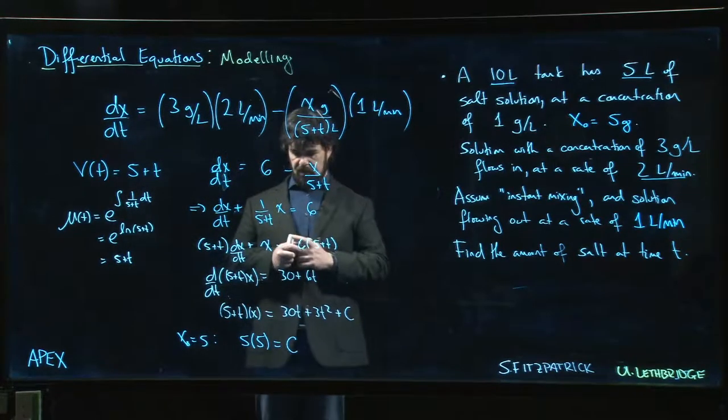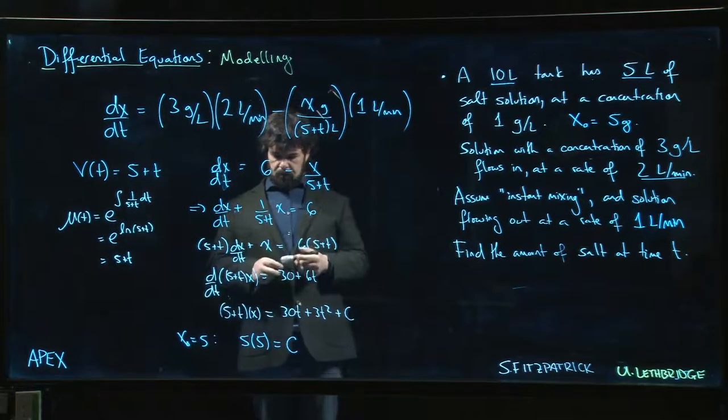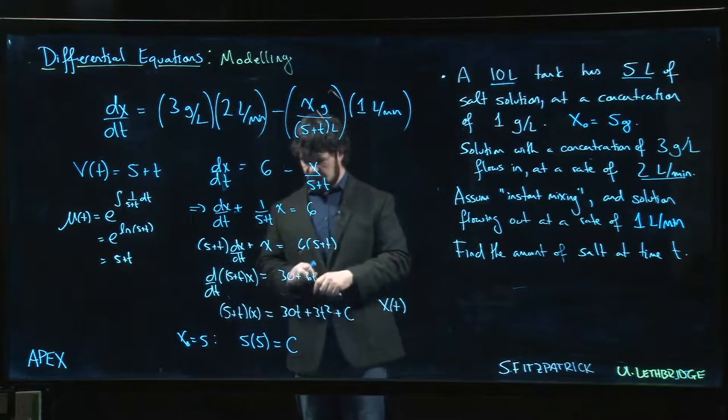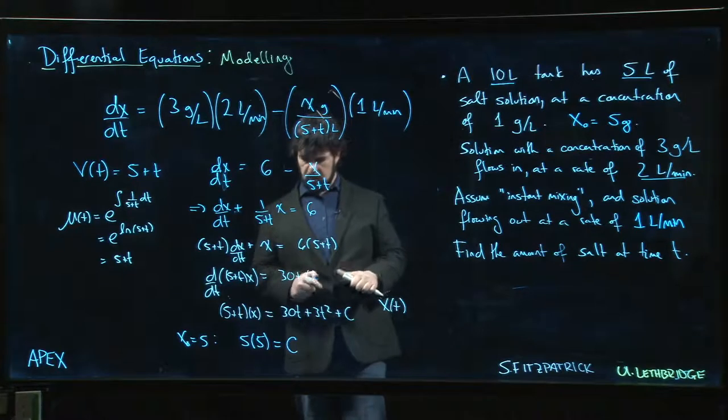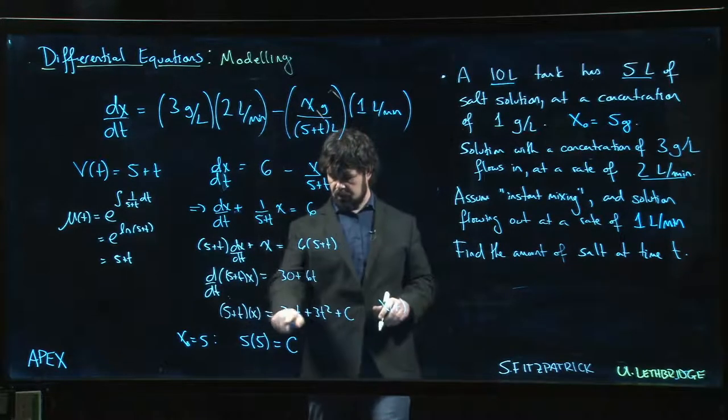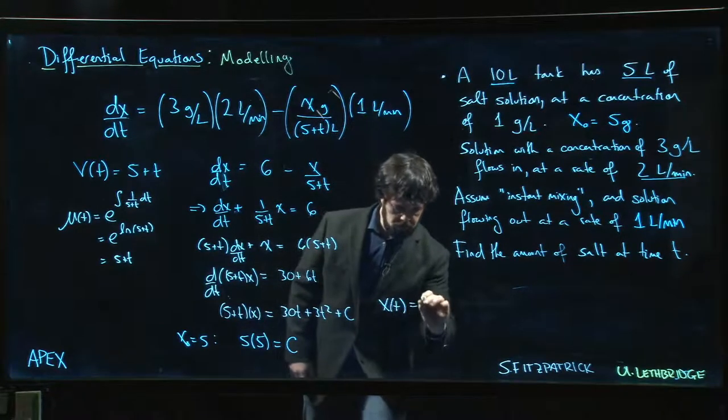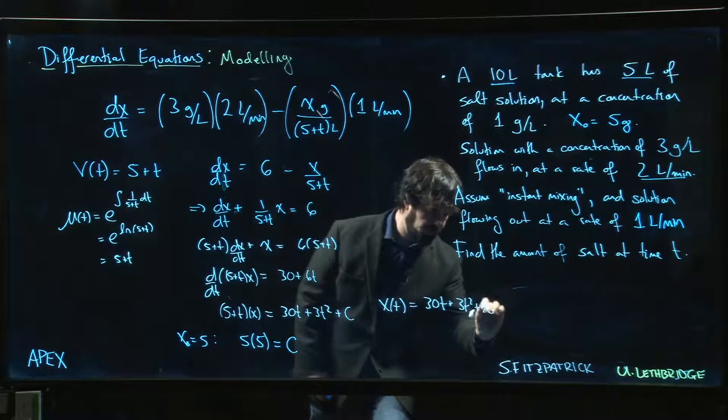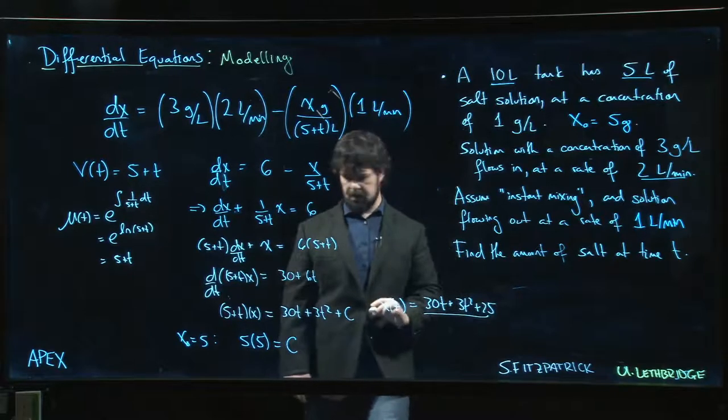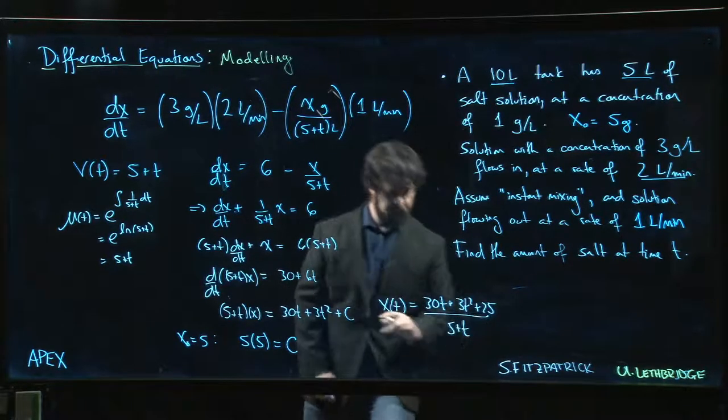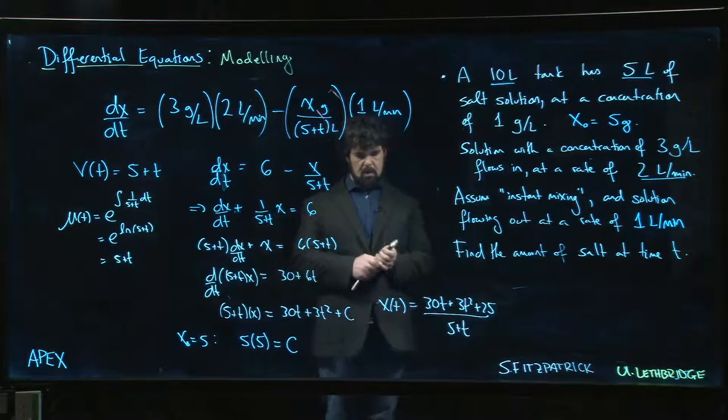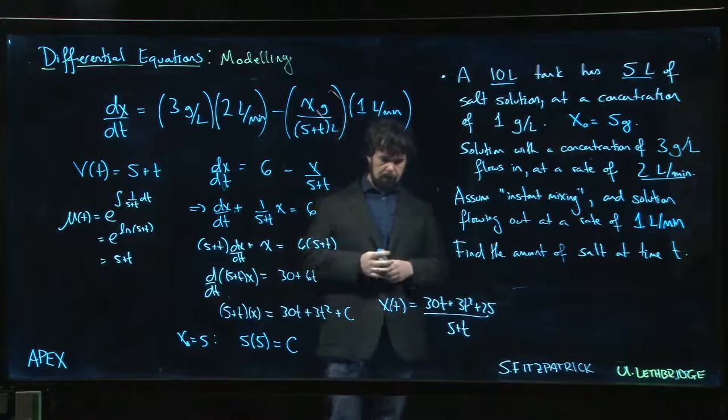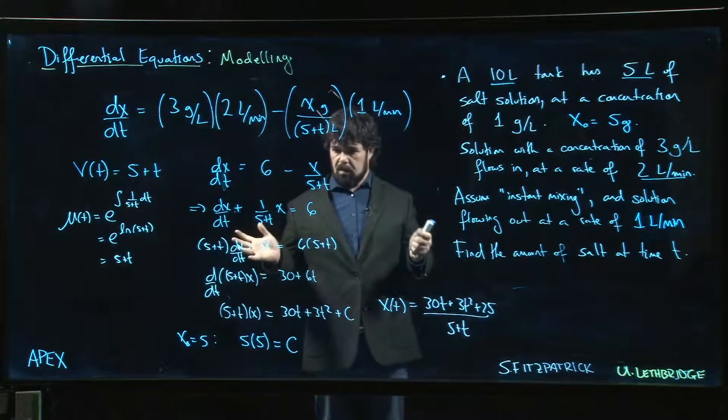Putting that in, I get x(t) equals—let's see what we have—we have 30t plus 3t² plus 25, divided by 5 plus t. Very different looking solution than the one that we had before, but we get there.